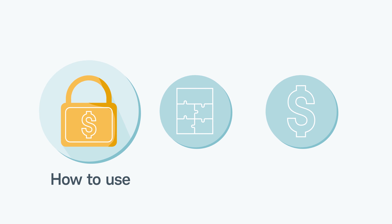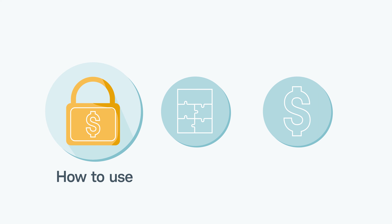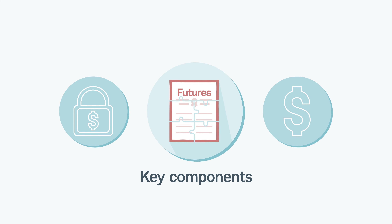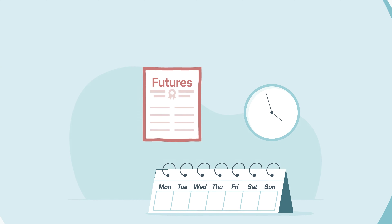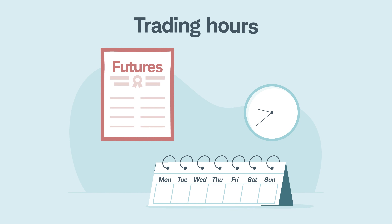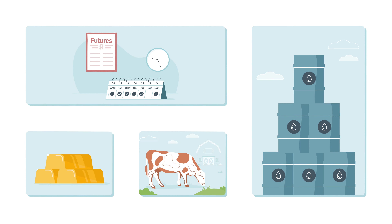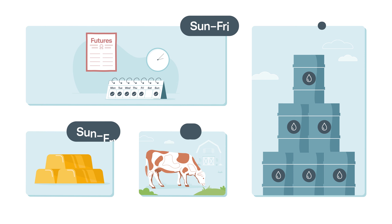Now that you know how a futures contract is used, let's look at five key components of a contract, also known as standard contract specifications. The first thing to look at is trading hours. Futures markets are open virtually 24 hours a day, six days a week. However, each product has its own unique trading hours.